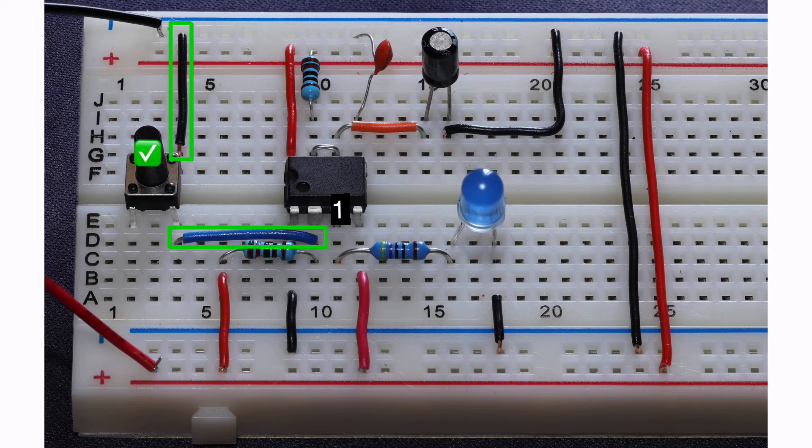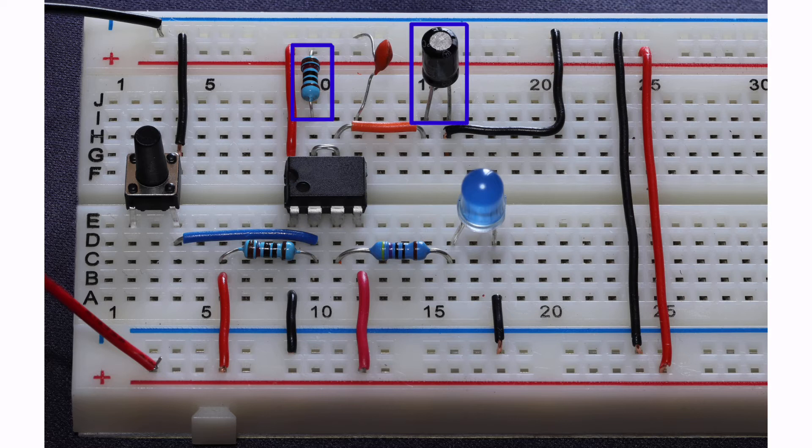Now let's look at the timing portion. As mentioned before, the timing is controlled by the resistor capacitor circuit. These two values determine how long the output actually remains high.